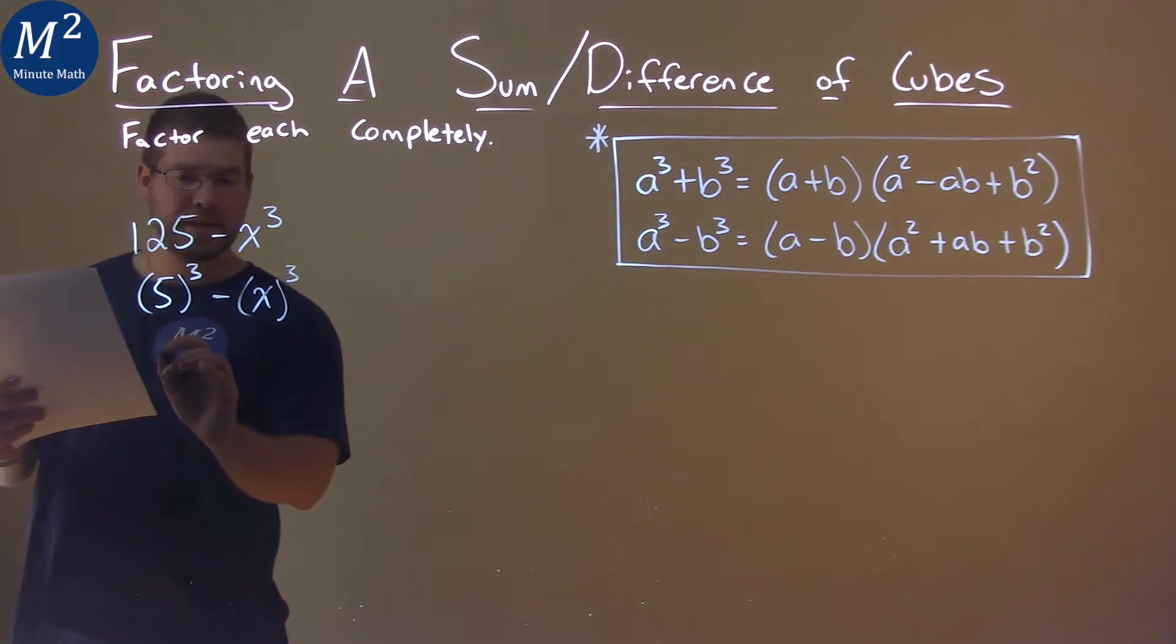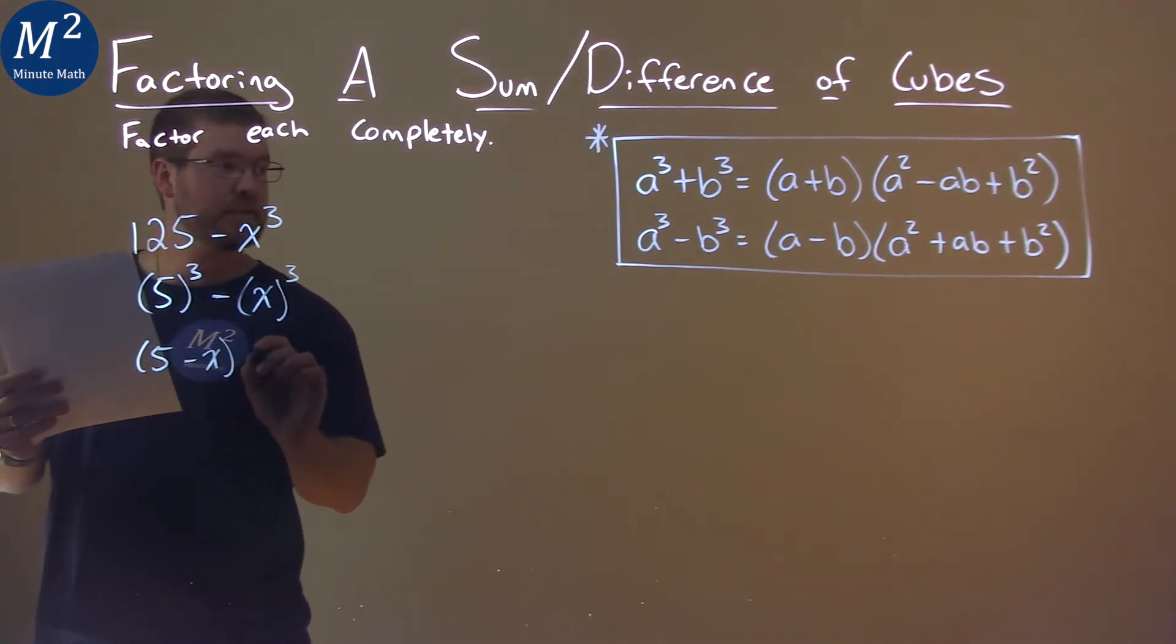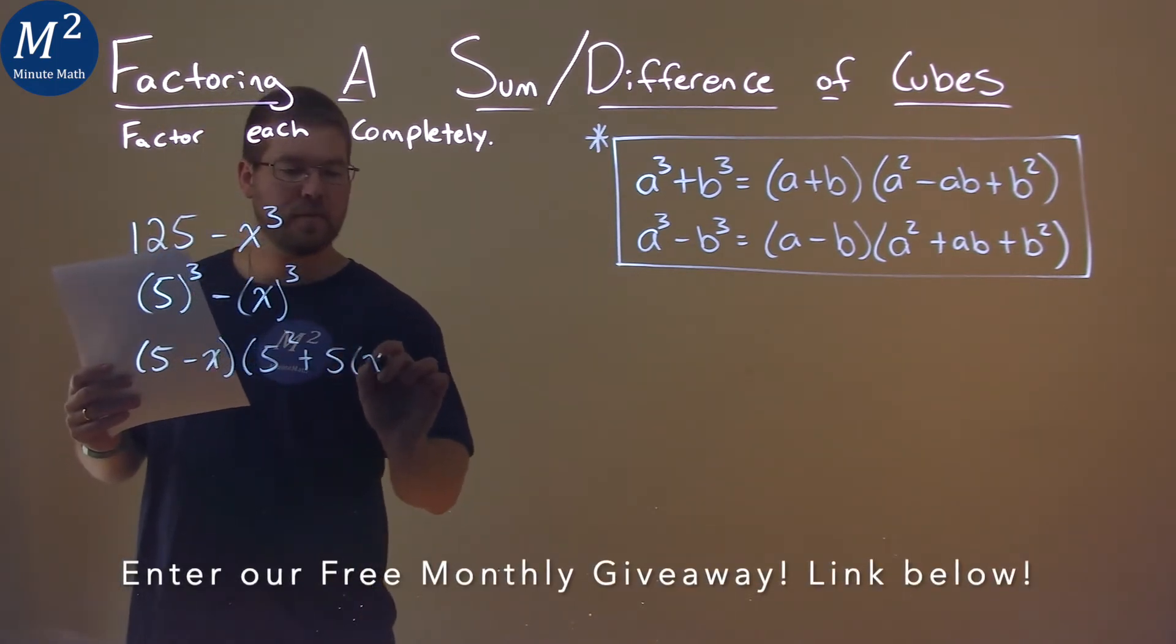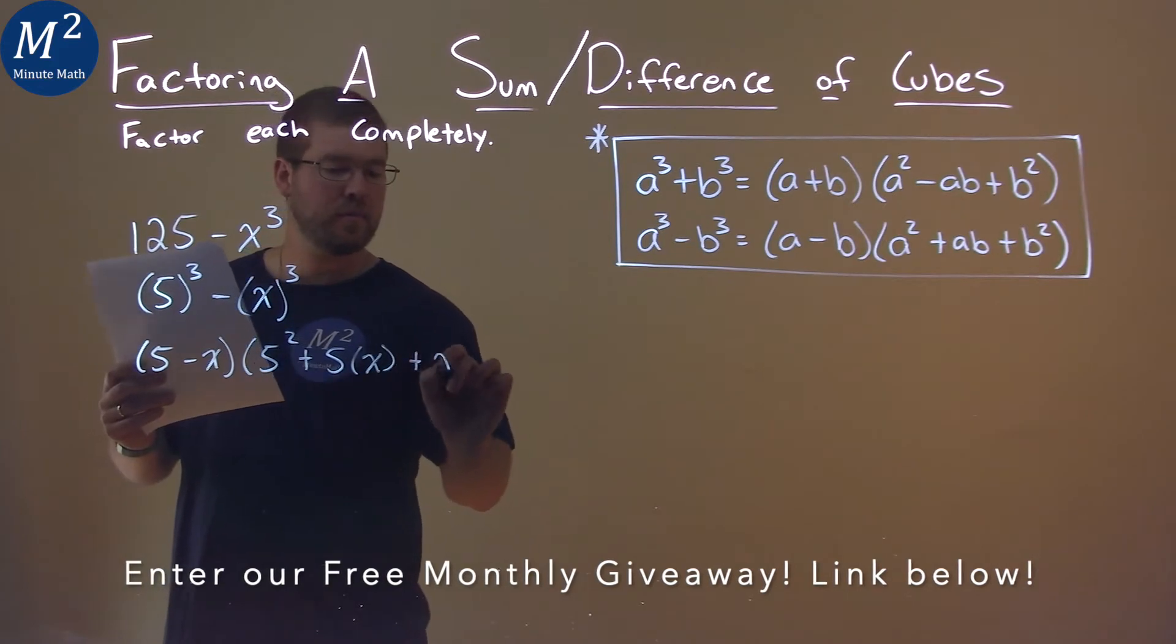So we use that formula, and they tell us that it's a 5 minus an x times 5 squared plus 5 times the x plus x squared.